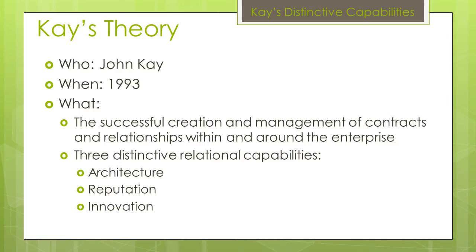So, what exactly is this theory? It originated from John Kay back in 1993. John Kay is a leading British business economist. His theory regarding the success of an organization focuses on not just management and creation of contracts, but that of the people and of the relationships developed. The three distinctive relational capabilities are architecture, reputation, and innovation. These capabilities allow a company to achieve success or a competitive advantage.